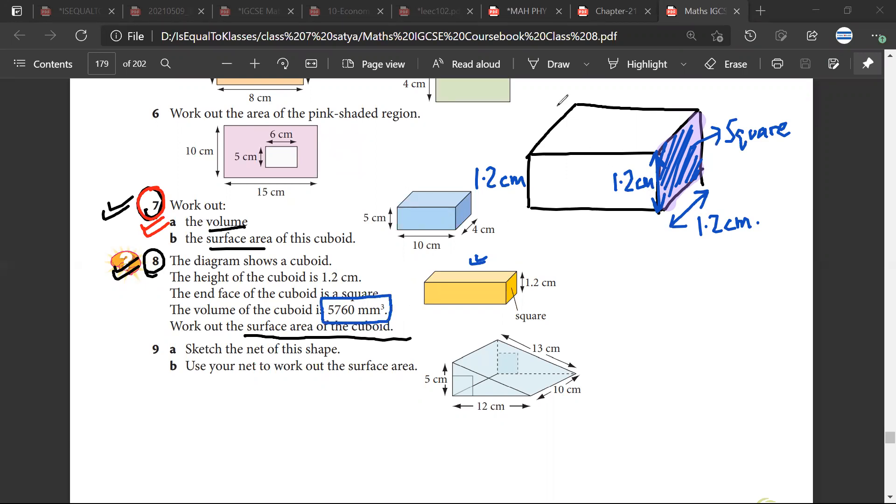Now I have been given the volume. Now what do I have? I have found that I was given height, I have found the breadth, and I assume the length could be L. Satya? So yes, so therefore L into 1.2 into 1.2 would be equal to 5760. Satya, have you understood this? Yes.